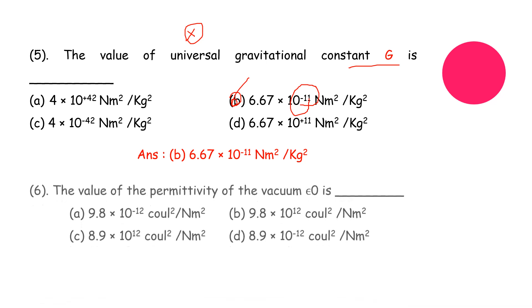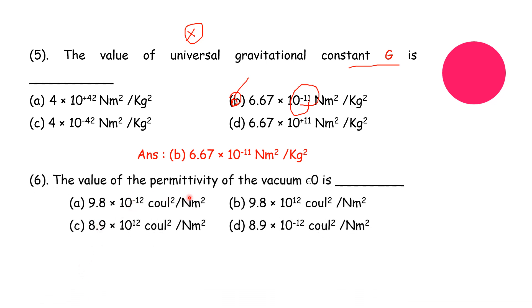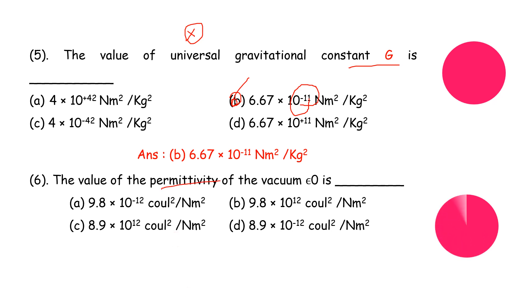The next question: what is the value of the permittivity of vacuum, epsilon naught? The correct answer is 8.9 × 10 to the power of minus 12 coulomb squared divided by newton meter squared.